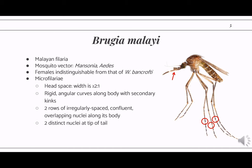Let's talk about Brugia before we compare and contrast their morphological differences with Wuchereria. Brugia is the pathogenic agent that causes Malayan filariasis. It's transmitted by mosquito vectors of the genus Mansonia and Aedes, and the diagnostic stage would also be the microfilariae or L1 larvae. The microfilariae would have a headspace of at least two-to-one ratio. They exhibit rigid, angular, kinky curves along their bodies, and in contrast to Wuchereria, the nuclei of Brugia microfilariae will not be clearly appreciable — the body will only contain what appears to be a mass of overlapping purple or blue nuclei.